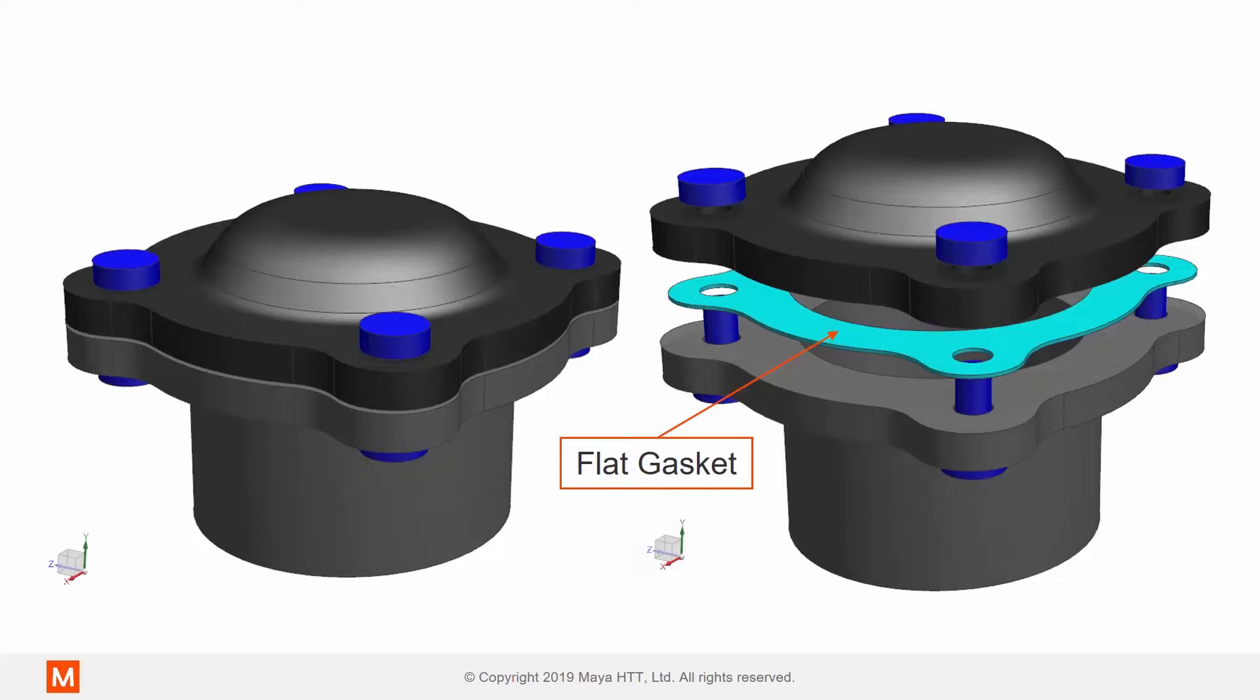The demonstration model is similar to the one used in the Bolt preload tutorial linked below. This model consists in a flange tube with an endcap bolted at its end. A flat gasket is also present between the bolted components.